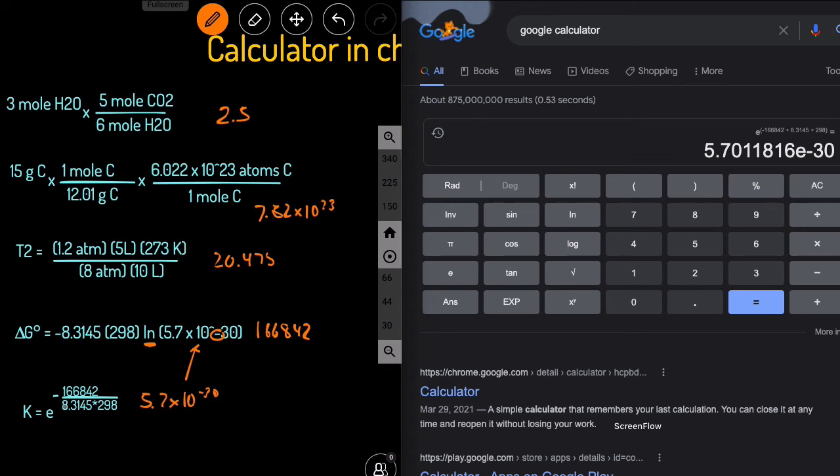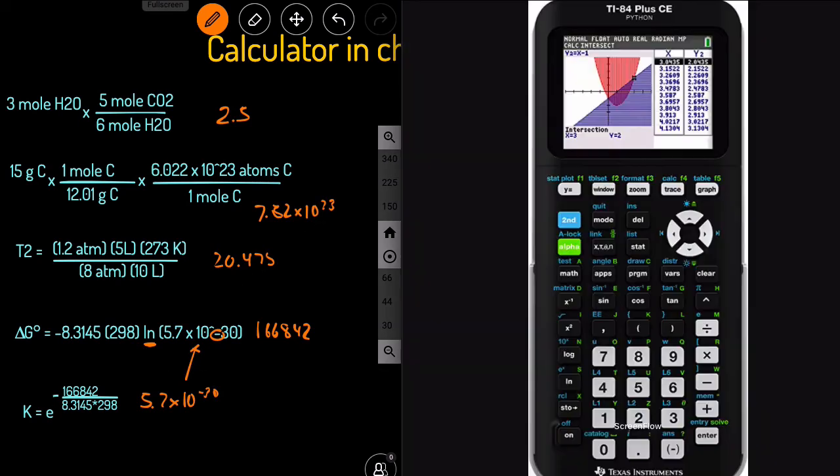So how do we enter e on this calculator? We can just click second and then click the ln. So when you click second and ln, you're going to activate the e raised to the power. It actually takes care of the raised to the power part. So you don't have to worry about that.